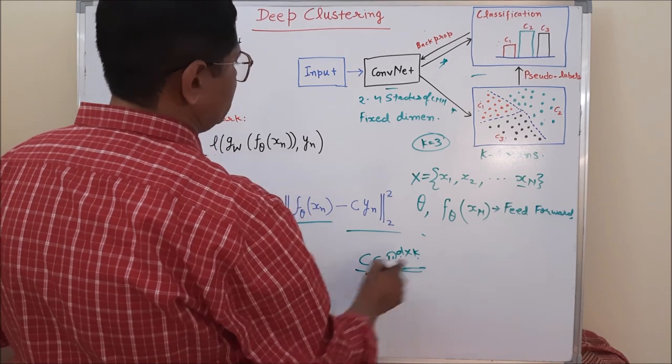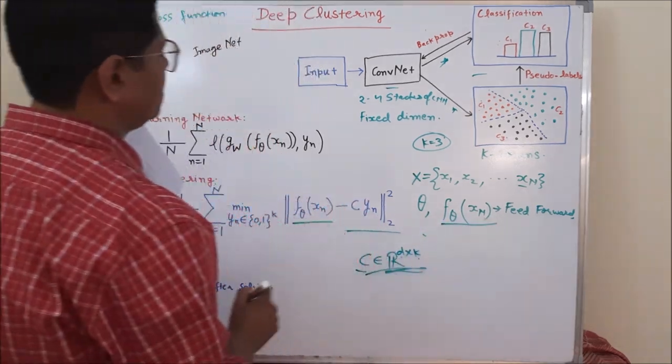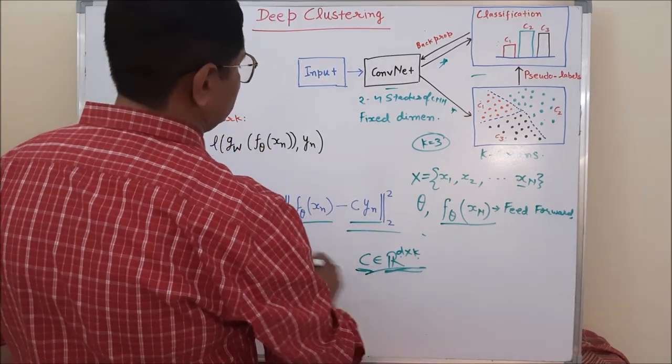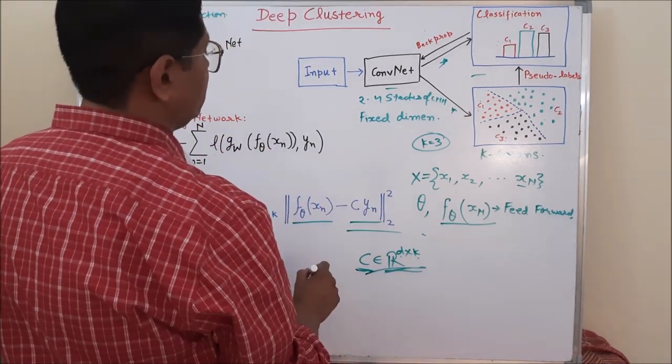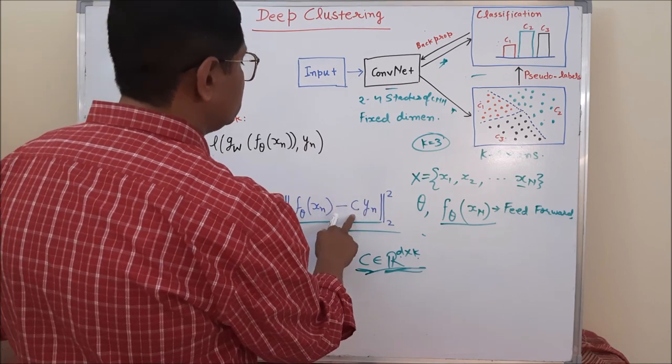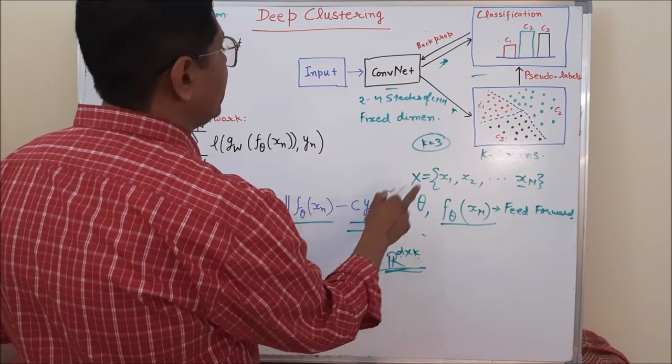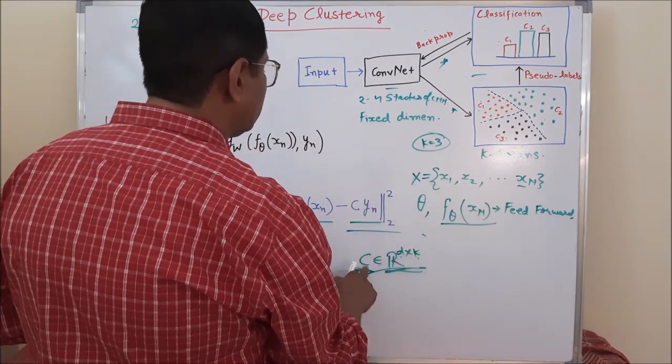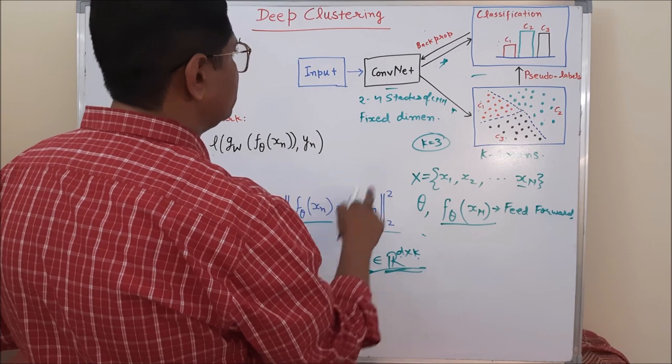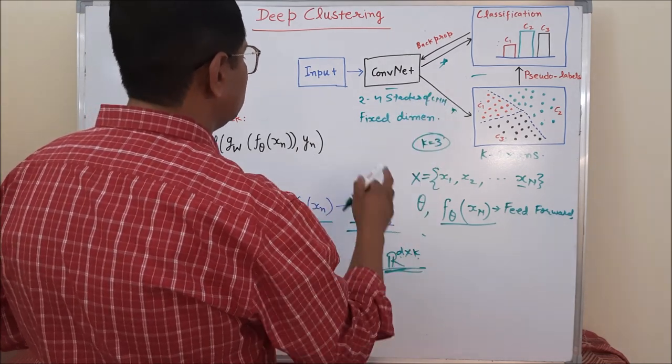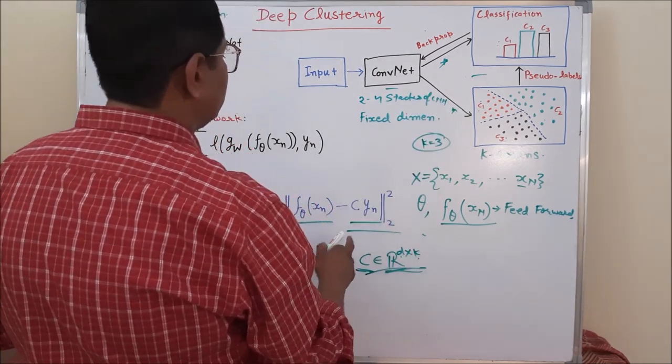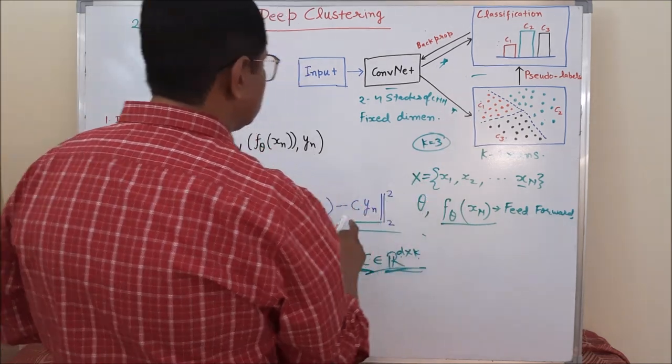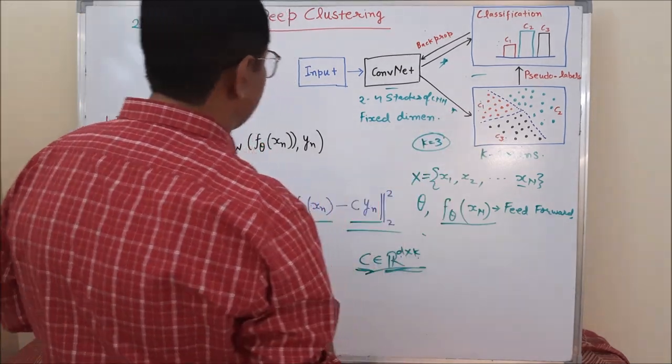And now F theta Xn, we already discussed this. The next part is C is the centroid point C1, C2, in such a way that its distance with respect to other points will be minimum to the centroid point.